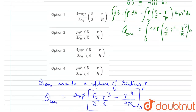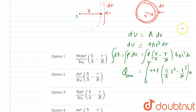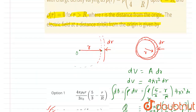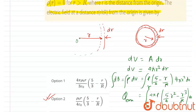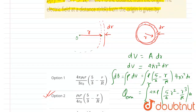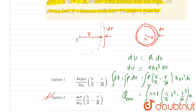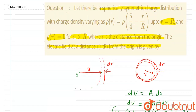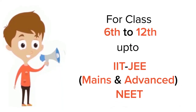Matching the options, the answer is option 2: E = ρ₀r / (4ε₀) × (5/3 − r/R). This completes the solution.